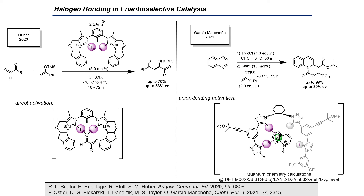In this Mukaiyama-Aldol reaction with this bis-imidazolium-based halogen bond donor, they were able to reach up to 33% ee. The second example was done by our group in 2021. In the Ritter-type de-aromatization, we were able to reach up to 30% ee.